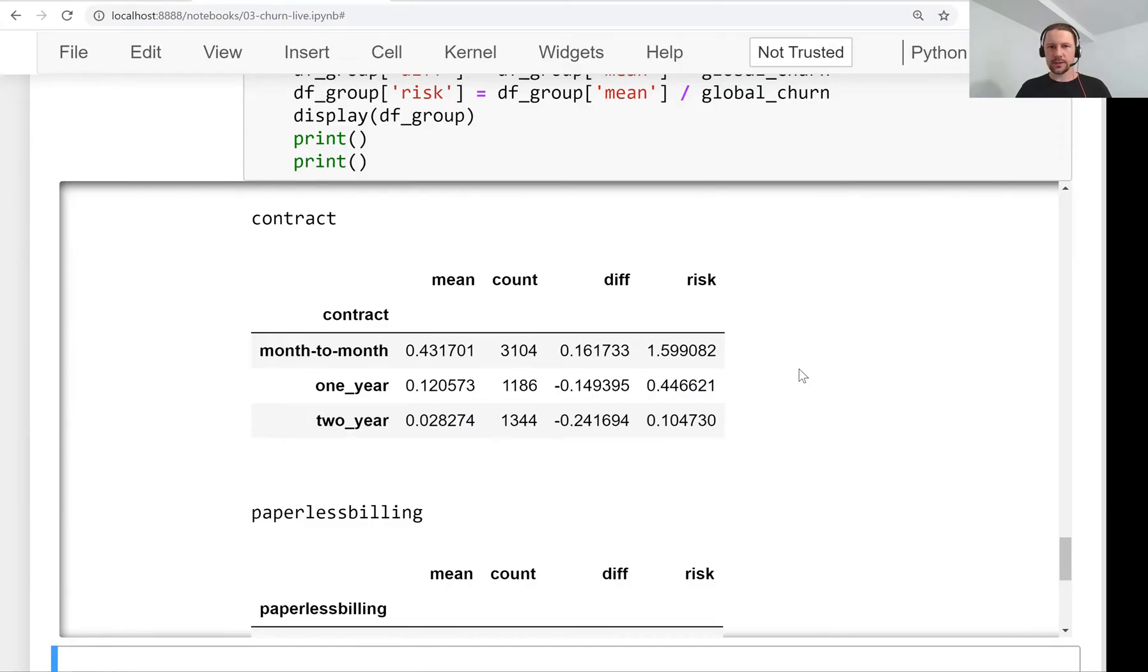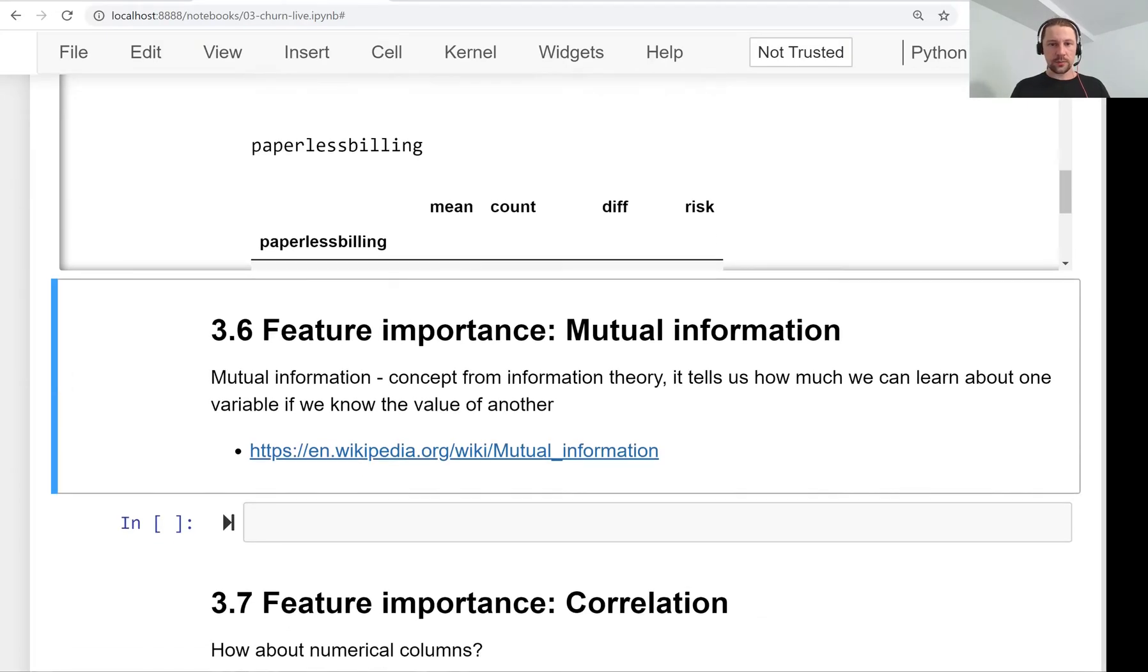It tells us that probably the contract variable is important, but we have no way of saying that contract is perhaps more important than other variables or that gender is less important than others. So mutual information is a concept from information theory that can actually tell us how important each variable is.